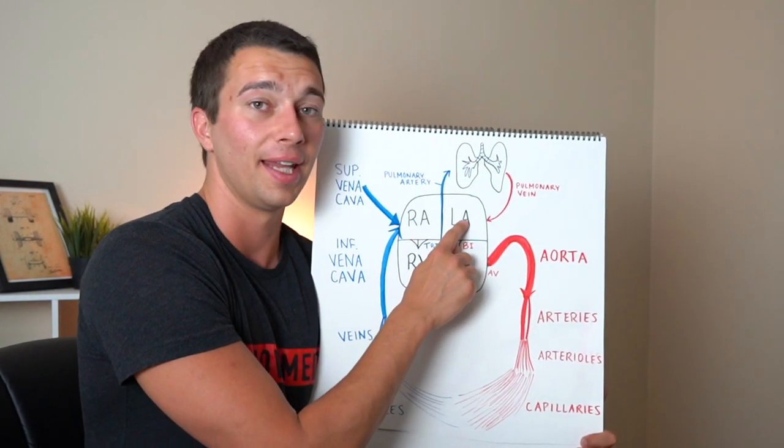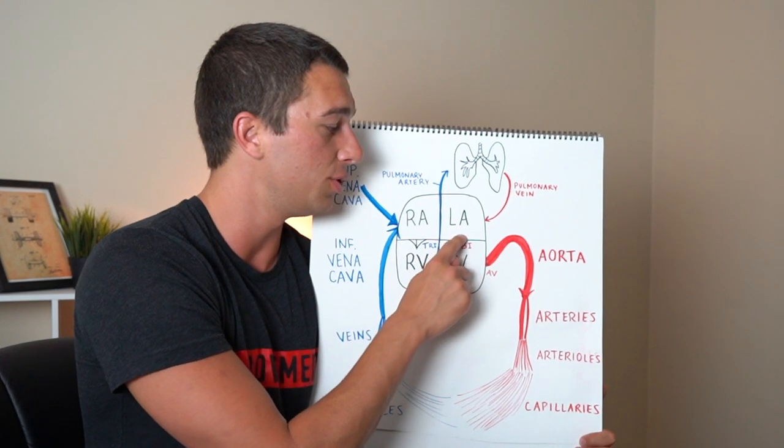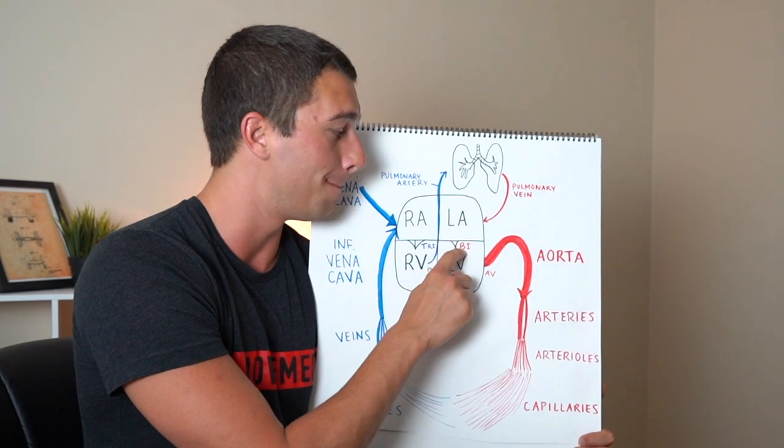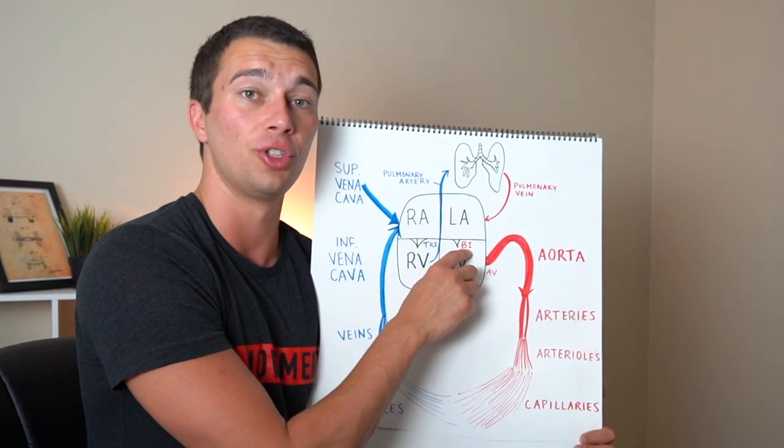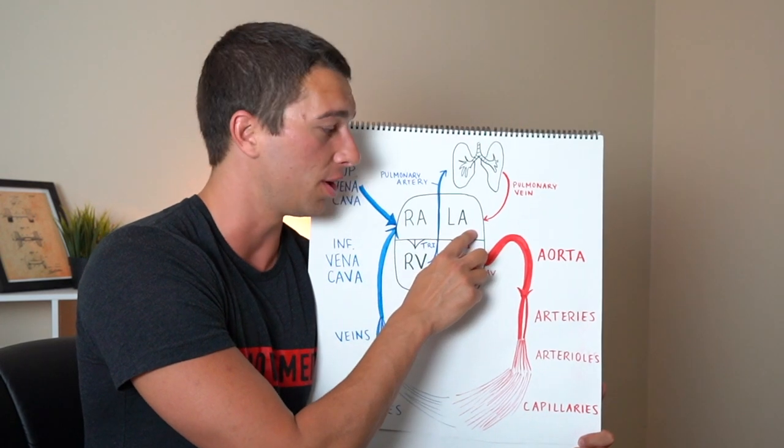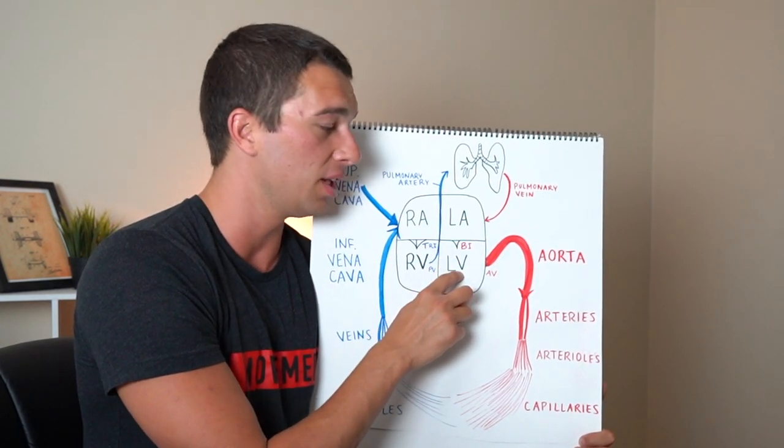And now the left atrium is going to be connected to the left ventricle. So blood's flowing from the left atria through the bicuspid valve which is also known as the mitral valve and that's on the left side of the heart and that's going to be going into the left ventricle.